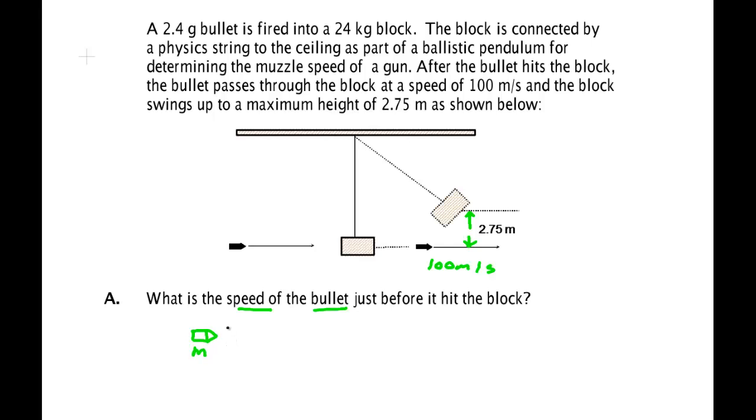I'll call that little m and this block I call big M and this bullet was traveling at some speed I'll call that V1 and this block was V2. I'll call that in both cases initial and V2 initial of the block was zero meters per second just before collision.